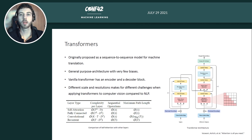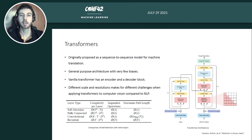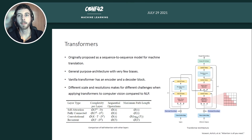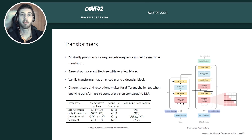The vanilla transformer uses an encoder and a decoder. The encoder has two modules: multi-head self-attention and a feed-forward network. Around each module we employ a residual connection and layer normalization. The decoder also uses cross-attention, where the keys and values come from the encoder and the queries come from the decoder.